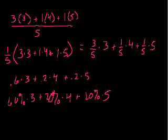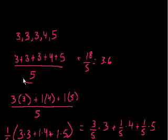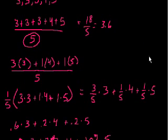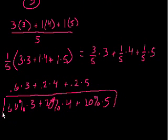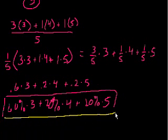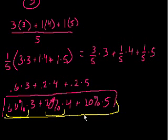What's interesting here is that in this form, I don't need to know how many numbers there are — I only need to know the relative frequencies. I'm telling you that 60% of the numbers are 3, 20% are 4, and 20% are 5. And if I calculate this out: 60% times 3 is 1.8, plus 20% times 4 is 0.8, plus 20% times 5 is 1.0.